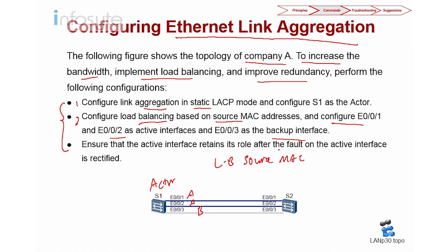We have to configure the maximum number of active links as two. Thirdly, ensure that the active interface retains its role after the fault of the active interface is rectified — basically they ask for preemption. Let's jump into the lab and see how this is being configured.